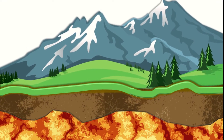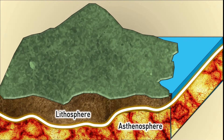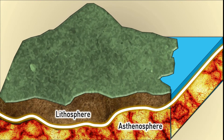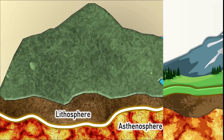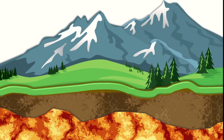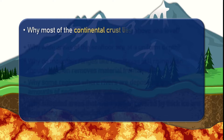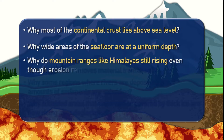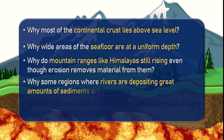From the interior of the Earth, we came to know that solid continental crust floats on solid mantle. But how does it happen? There are still other related questions like: why does most of the continental crust lie above sea level? Why are wide areas of the sea floor at a uniform depth? Why do mountain ranges, like the Himalayas, still rise even though erosion removes material from them? Why do some regions, where rivers are depositing great amounts of sediments, subside?